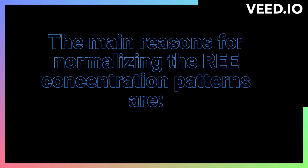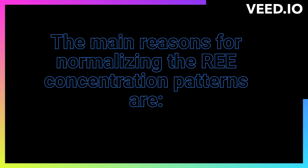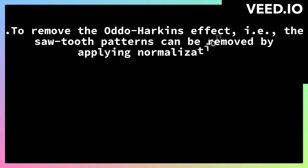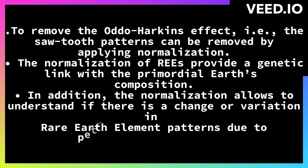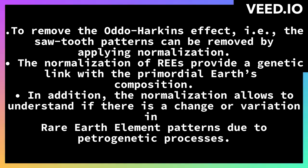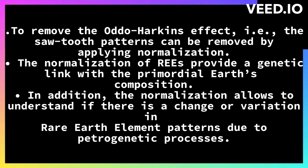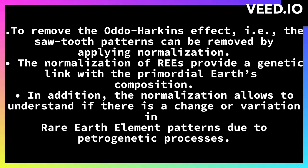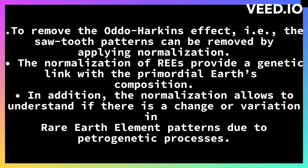The main reasons for normalizing the REE concentration patterns are: Number 1 — to remove the Oddo-Harkins effect, i.e., the sawtooth patterns can be removed by applying normalization. Number 2 — the normalization of REEs provides a genetic link with the primordial Earth's composition. Number 3 — the normalization allows us to understand if there is a change or variation in rare earth element patterns due to petrogenetic processes.